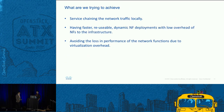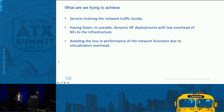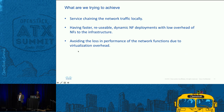Thank you, Anant, for going over the terms. Now let's go forward and see the design and what we are trying to achieve. The first thing is that we are trying to do the service chaining locally on the nodes where your VMs would be available, so that would reduce the latency, having faster, reusable, dynamic network function deployments with low overhead of network function infrastructure. It doesn't add a lot of weight to your OpenStack infrastructure, avoiding the loss of performance of network functions due to virtualization overhead.